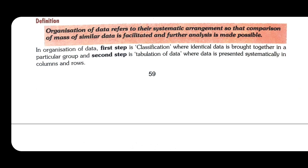In organization of data, the first step is classification, where identical data is brought together in a particular group. The second step is tabulation of data, where data is presented systematically in columns and rows — تاکہ اس کو سمجھنا اور analyze کرنا آسان ہو سکے۔